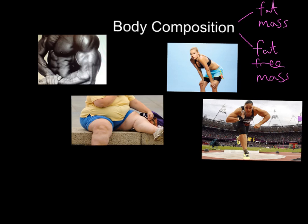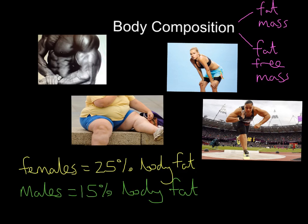A wrestler is going to have a lot more body fat than a long-distance runner. The general guidelines are as follows: ladies should be 25% body fat, so 25% of your weight should be body fat. Whereas males, 15% should be body fat. Ladies have slightly more body fat due to things like childbirth - you're going to need that throughout your life.